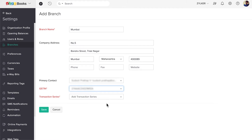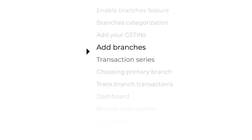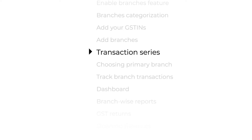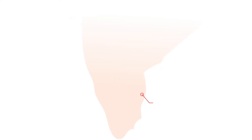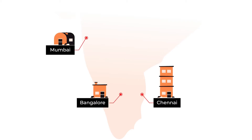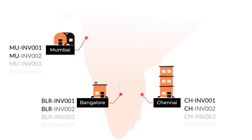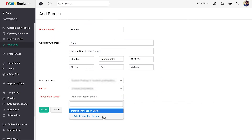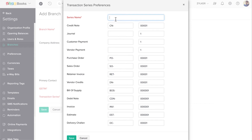Next, select the transaction series from the drop-down. Different branches might follow different transaction series. Let's say you have branches in Chennai, Mumbai, and Bangalore, and the prefix and suffix for all the transaction numbers is different. For example, this is the invoice number series for the three branches. You can set the prefix and suffix for the estimates, sales orders, credit notes, journal numbers, etc. for all your branches. Click Add Transaction Series, give the series name, enter the suffix and prefix for all the modules, and save it.